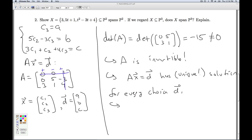What does that mean? That means that x spans p2. Because every polynomial in p2 can be realized by a linear combination of vectors in x.